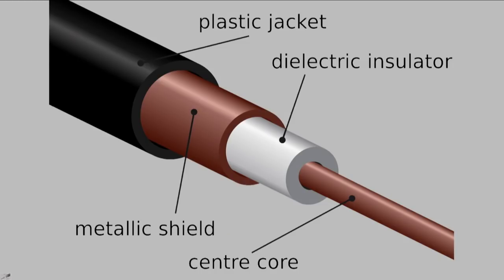In some applications, not so much for ham radio, although we could certainly use it, that dielectric insulator will be air, with just standoffs holding the center conductor in place. You'll have to keep some kind of pressure in that line — nitrogen or dry air — to keep the moisture out. But most of the stuff we use has some type of plastic or Teflon as the dielectric insulator. The center conductor can be either solid or stranded cable, depending on the application.